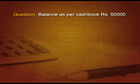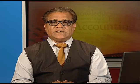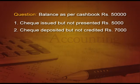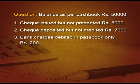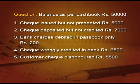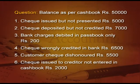The question: balance as per cash book given, 50,000. Entry 1: check issued but not presented, 5,000. Entry 2: check deposited but not credited, 7,000. Entry 3: bank charges debited in pass book only, 200. Entry 4: check wrongly credited in the bank, 6,500. Entry 5: customer check dishonored, 5,500. Entry 6: check issued to the creditor not entered in the cash book, 2,000. In this question, first we decide which entries go to the amended cash book and which go to the bank reconciliation.